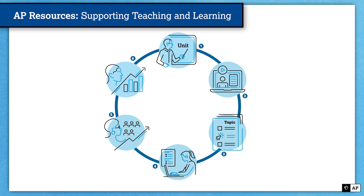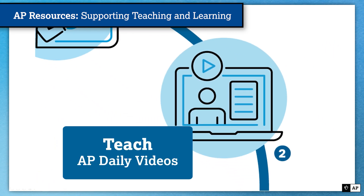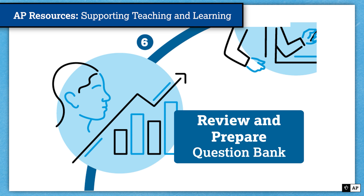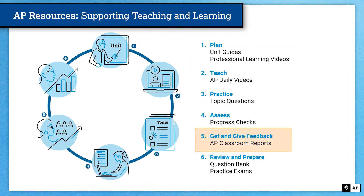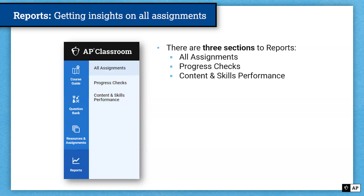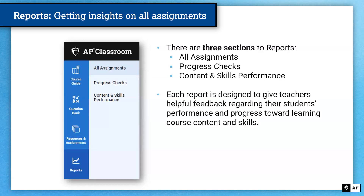First, a resource overview. If you've joined us for other sessions, we always talk about our AP resources in terms of supporting teaching and learning for the entire instructional cycle, and for each stage we have some AP instructional resource to support it. In this particular video, we're going to focus on AP Classroom reports, which will help you get and give feedback to your students. On the left-hand navigation panel in AP Classroom, you will see three different available reports: all assignments, progress checks, and the content and skills performance report. Each report is designed to give teachers helpful feedback regarding students' performance and progress toward learning course content and skills.